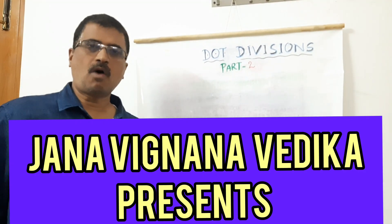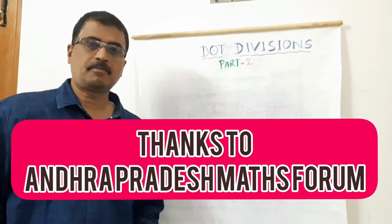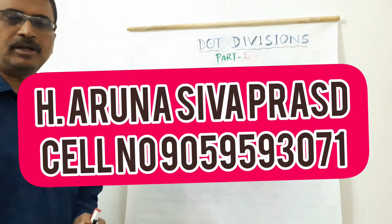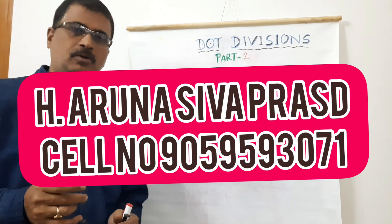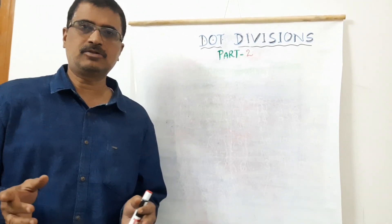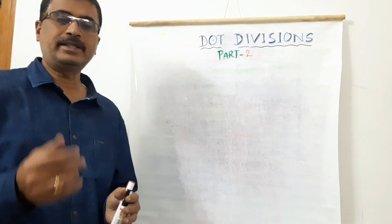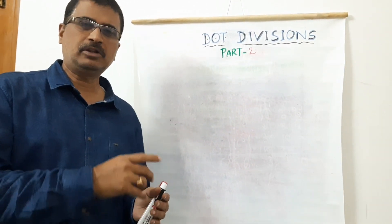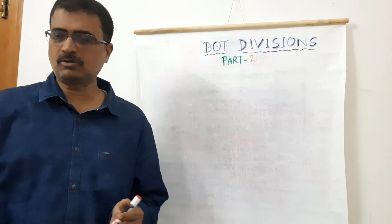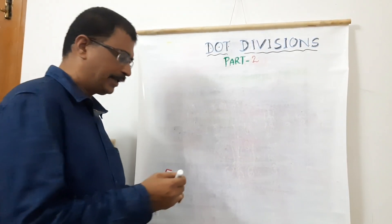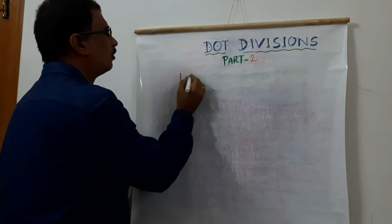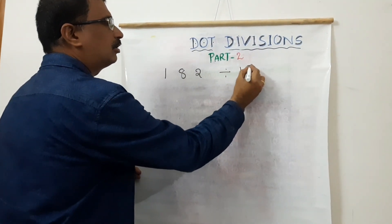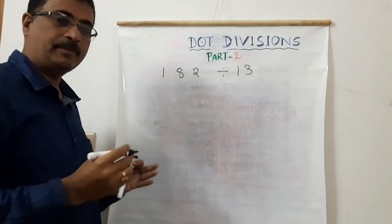Welcome to WOW Divisions Part 2. Part 1 covered single-digit divisors without using tables. Now we move to two-digit numbers — for example, 182 divided by 13, where the 13 times table is not a standard table.